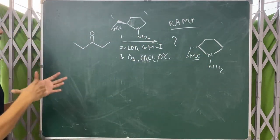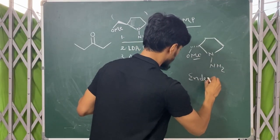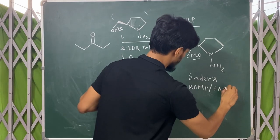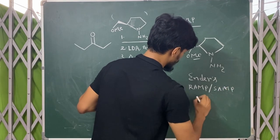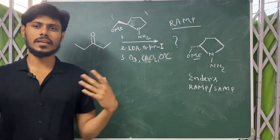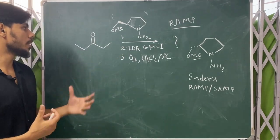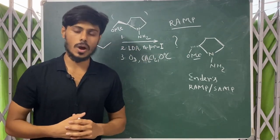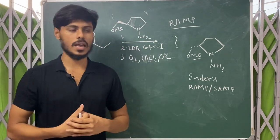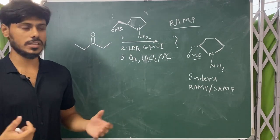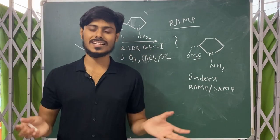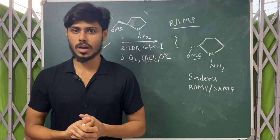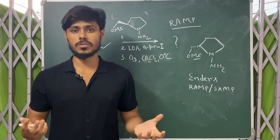These two reagents are used and the reaction is called Ender's RAMP/SAMP stereoselective alkylation, or you can do other additions also. In this reaction we will be talking about alkylation, and this question is actually taken from CSIR NET 2022. In the first part I will give you a mnemonic by which you can predict the stereoselective outcome, and in the second part I will discuss the origin of the stereoselectivity.